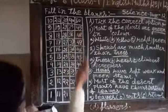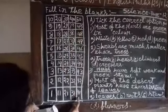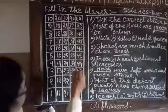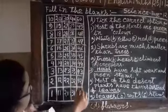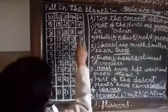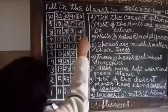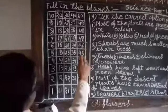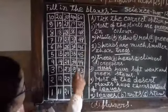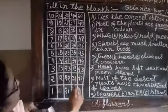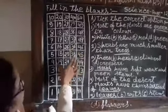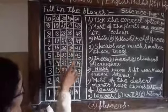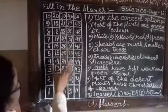Counting down from 50 to 41: 49, 48, 47, 46, 45, 44, 43, 42, 41. So, we are going to do the box.